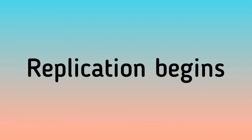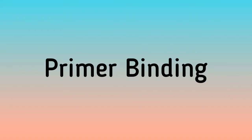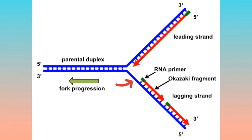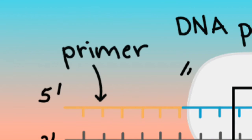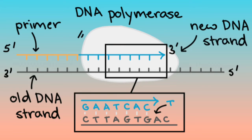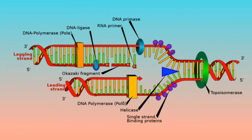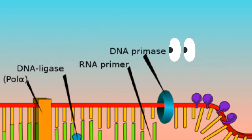Replication begins: Primer binding. The leading strand is the simplest to replicate. Once the DNA strands have been separated, a short piece of RNA called a primer binds to the 3' end of the strand. The primer always binds as the starting point for replication. Primers are generated by the enzyme DNA primase.